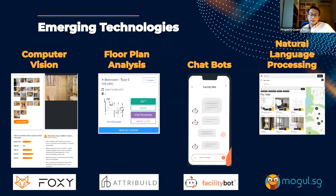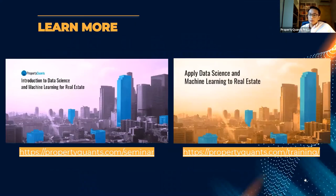Speaking of natural language processing, one interesting example is in property listing websites. You can try mogul.sg — you simply key in free text the way you'd describe a property to another human: 'near a train, with a balcony, on a high floor, near a particular school.' Using natural language processing methods, this is converted into a specific set of search parameters and the user gets a very relevant set of property listing results. That's a really interesting application of data science to real estate.